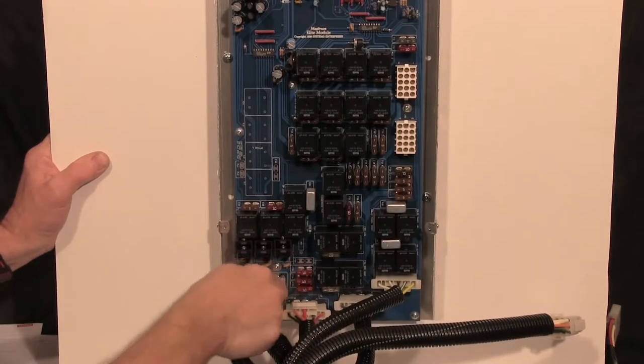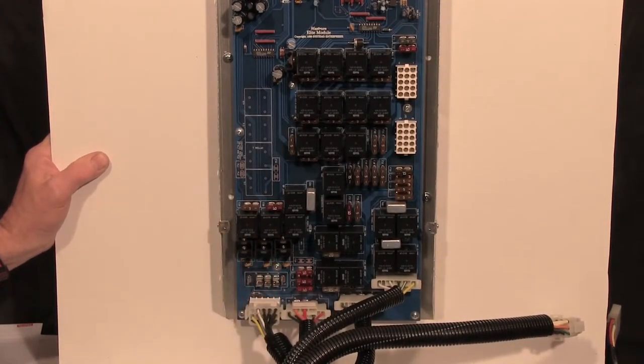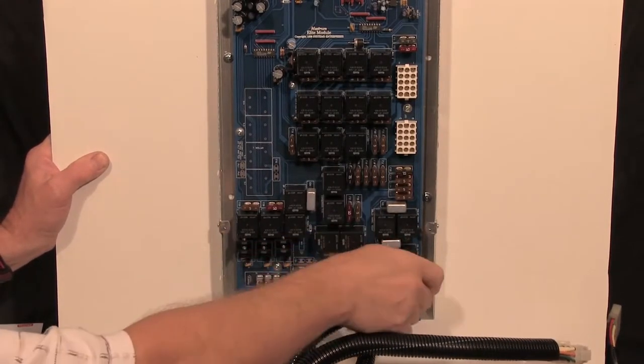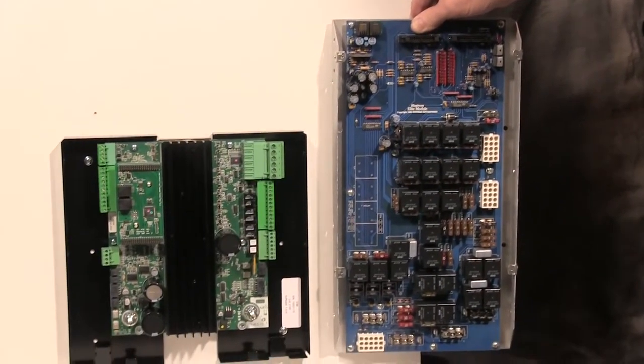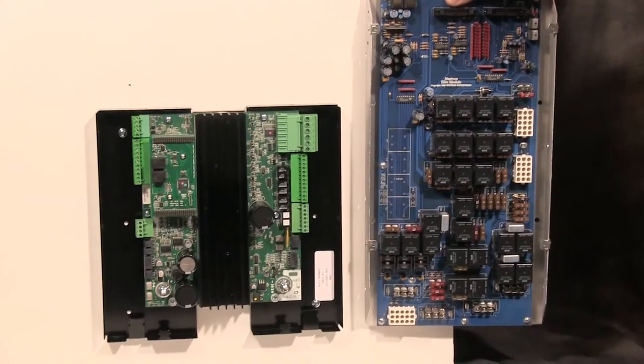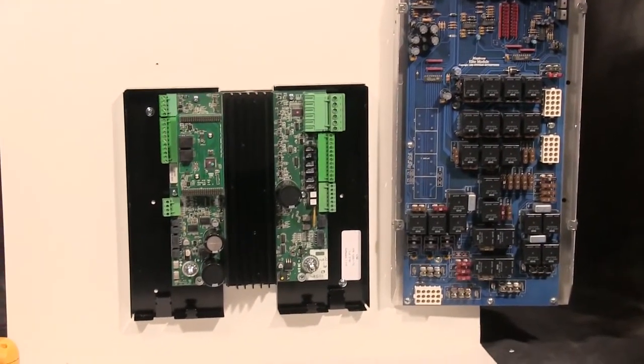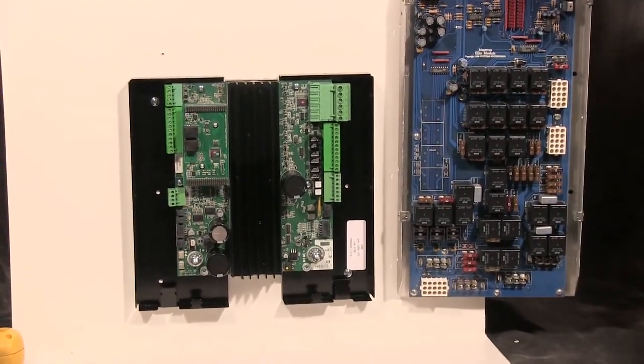Unplug all plugs from the old system and you're now ready to replace the old input-output module. Now it's time to mount the SmartTouch IOM. Make sure to mount the IOM closest to the wire connections so you don't have to extend the wires.